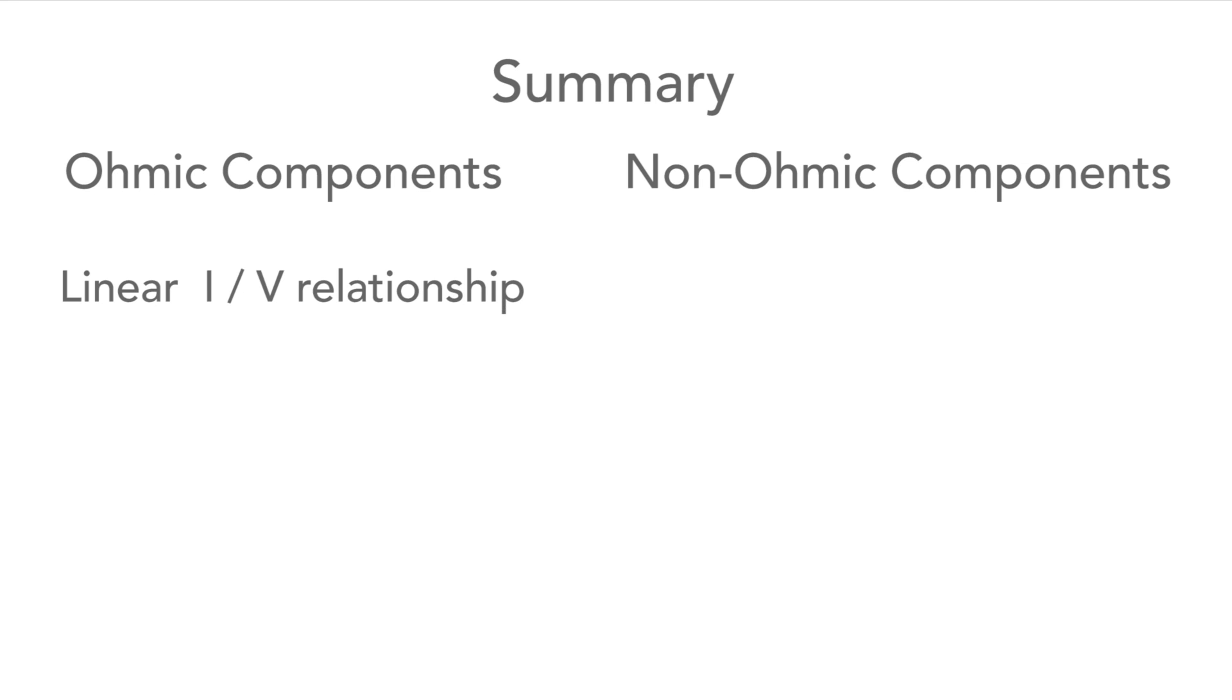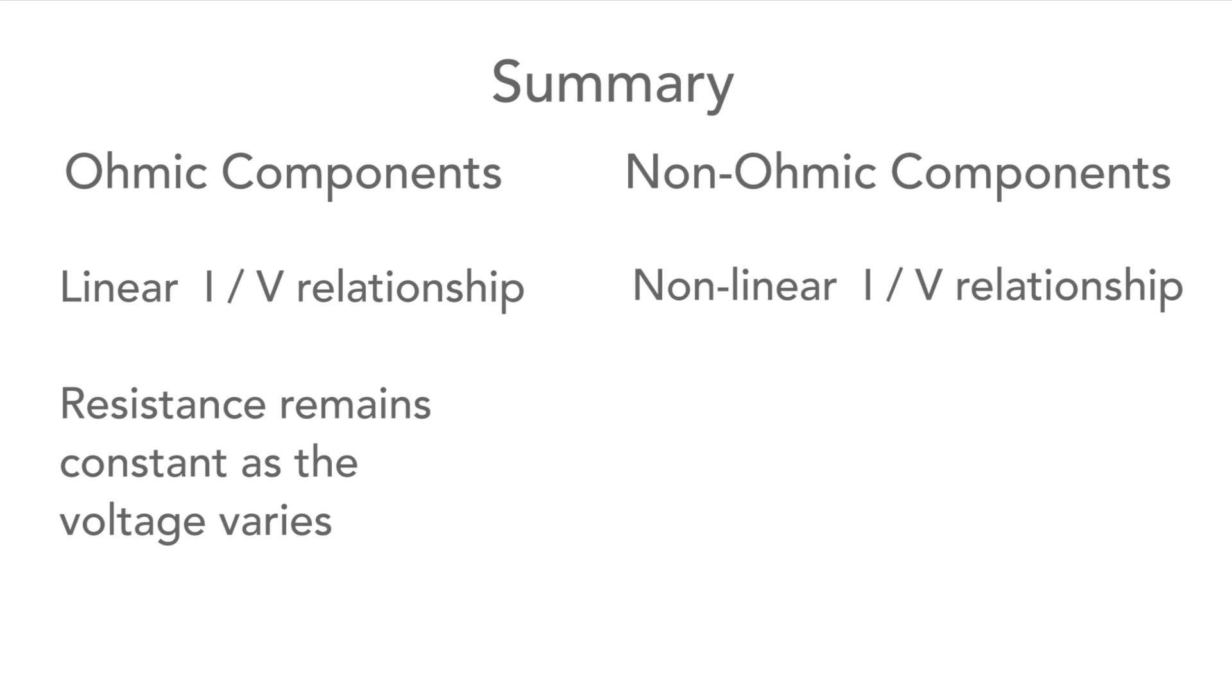In this video we have seen Ohmic and non-Ohmic components and their operation. An Ohmic component has a linear relationship between current and voltage and therefore has a constant resistance with voltage. And we also saw non-Ohmic components that do not have a linear relationship and therefore they do not have a constant resistance for different voltages.